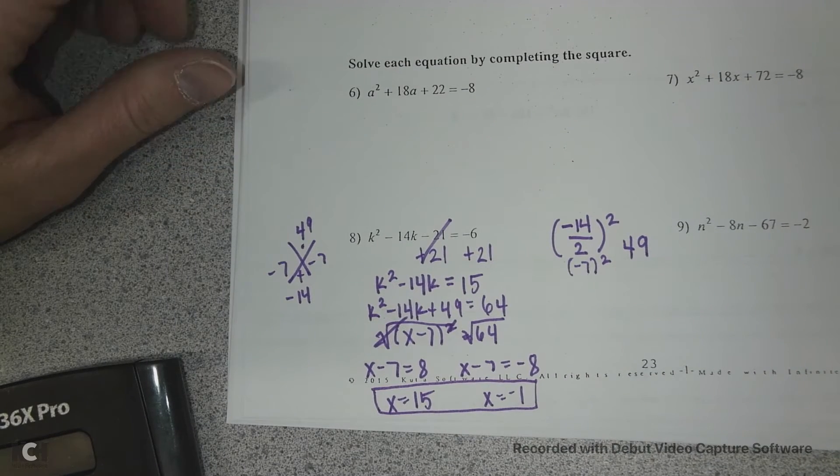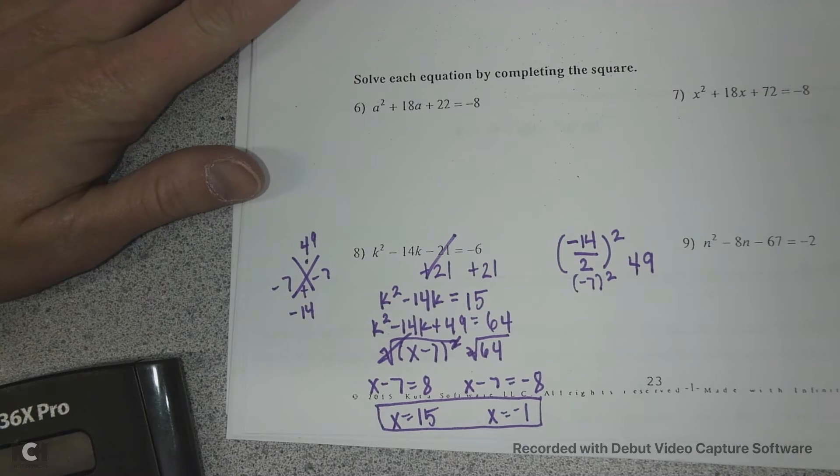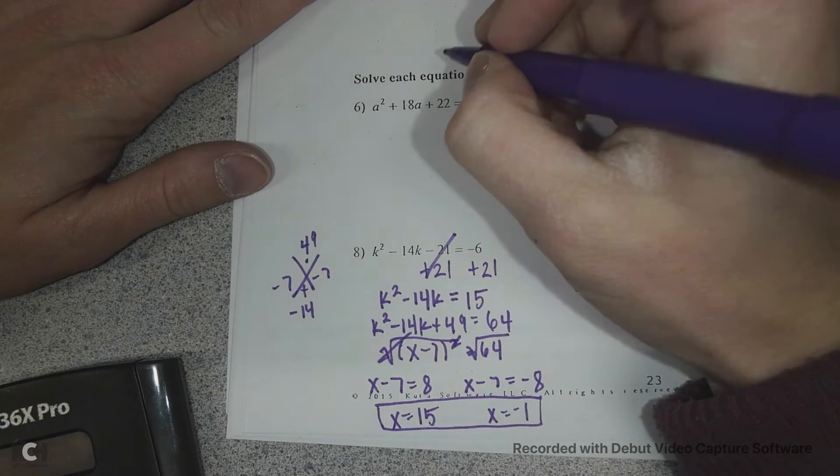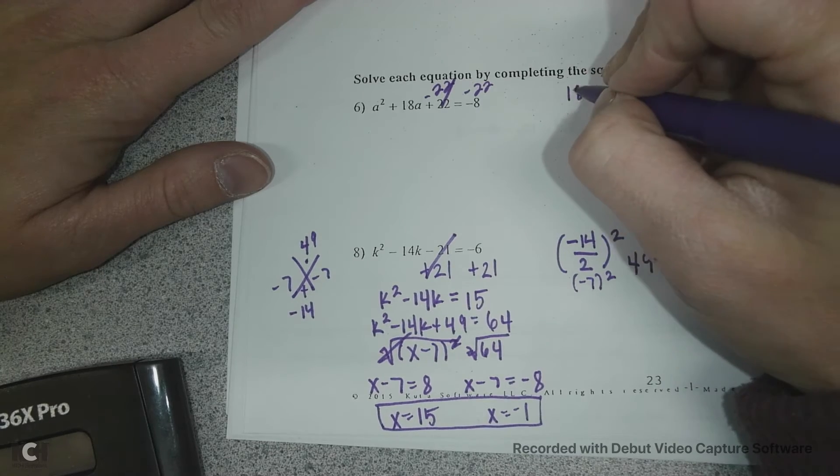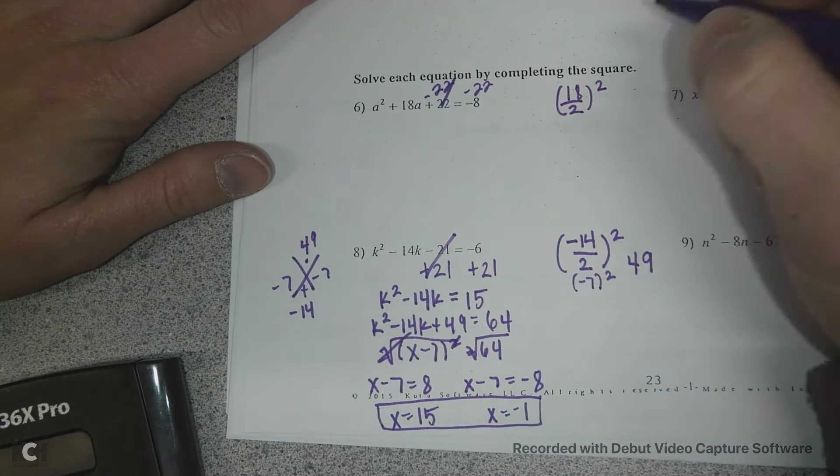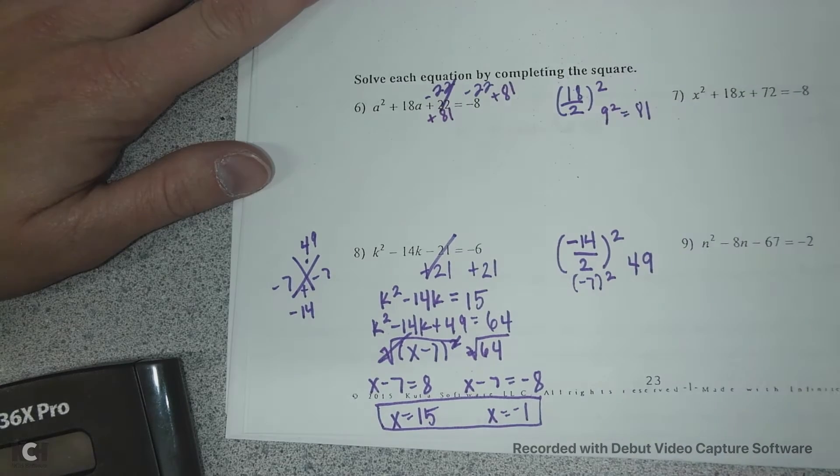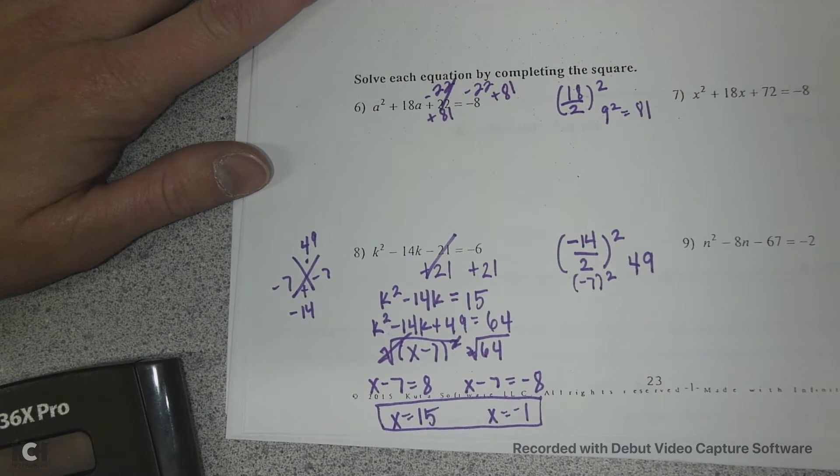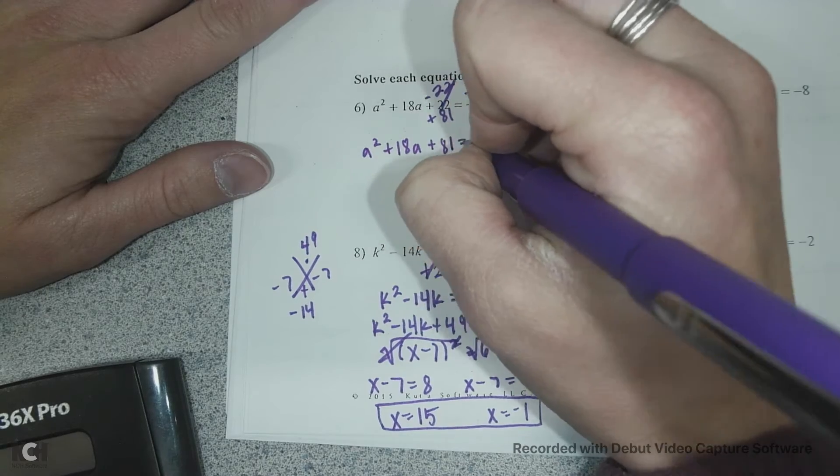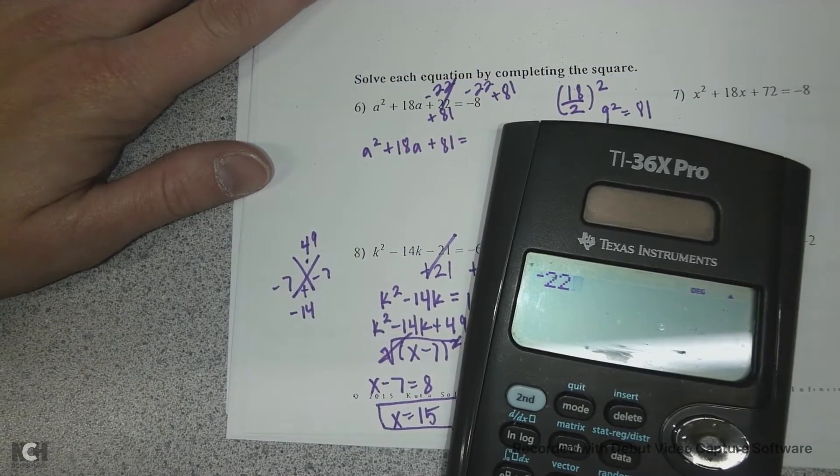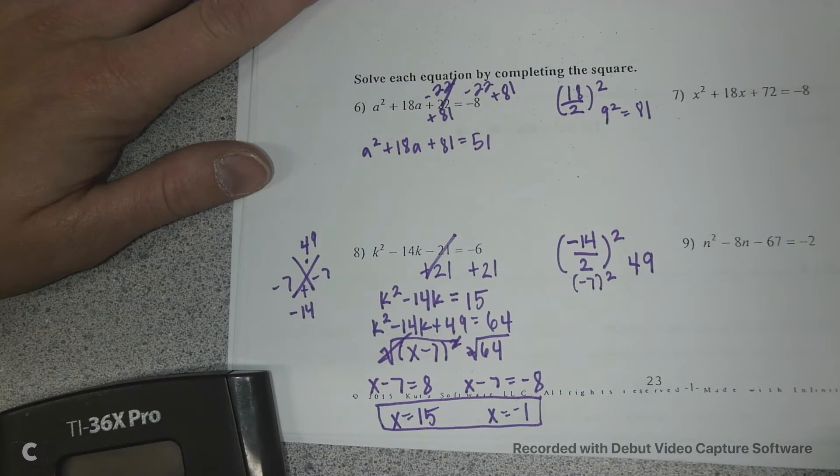So those are my two answers for this problem. And this is one similar to the things that you've been doing. This one is similar to number 6 is similar to what we've been doing, but it's not as pretty of an ending. So again, we start by subtracting 22 on each side. And also at the same time, we could do 18 divided by 2 squared. 18 divided by 2 is 9 squared is 81. So then I'm also going to add 81 to each side as well. So I'm just skipping steps because we've done this a few days.